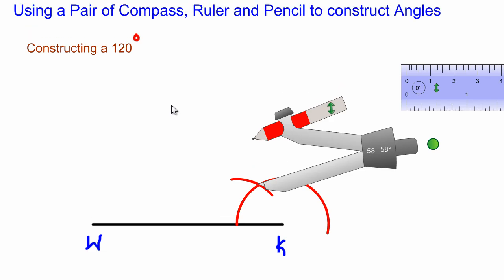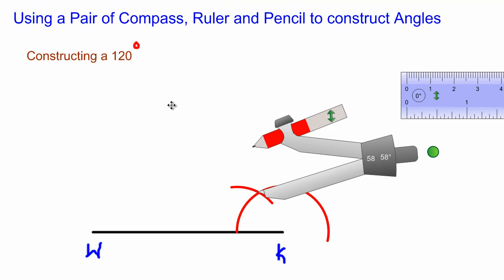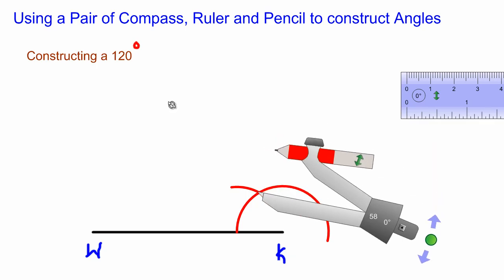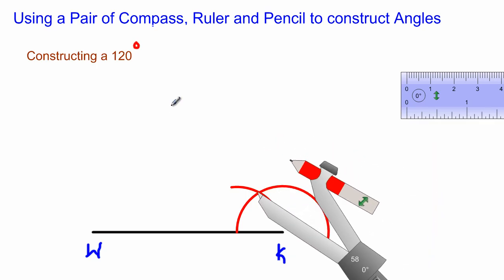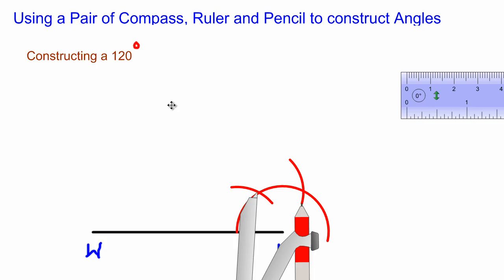but when I was constructing a 60-degree angle before, this is what we did. So this angle here would be 60 degrees. If I'm constructing a 120-degree angle now, then all I need to do is swing the arc once more, because 60 plus 60 would give me 120.